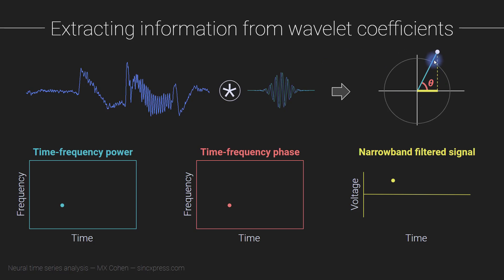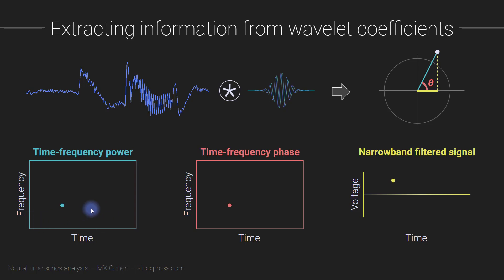Once you've extracted the power time series for all time points at one frequency, you go back and repeat the entire procedure using a wavelet with a different frequency — slightly faster, for example. Repeating this convolution gives you the next line in the time-frequency plot. With complex Morley wavelet convolution, we build up the time-frequency power plot one frequency at a time, repeating the same convolution procedure across a range of frequencies.